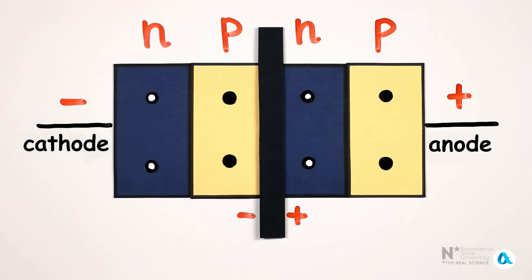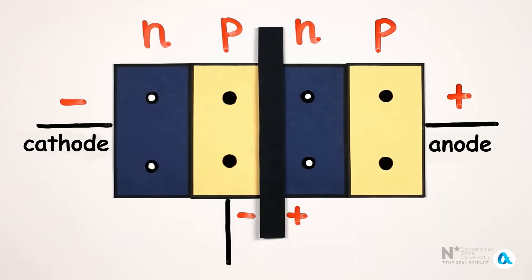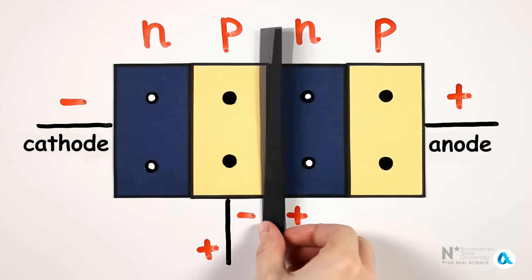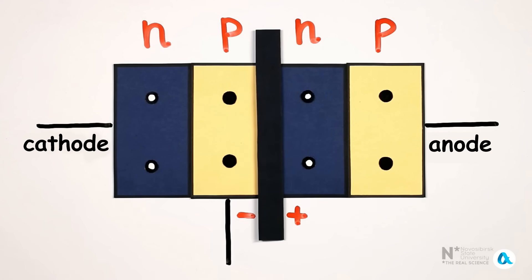However, we also have a control electrode, which is connected to the p-region adjacent to the cathode. And when we apply a positive voltage to it, the breakdown of the middle p-n junction occurs at significantly lower voltages. In this case, after removing the voltage from the control electrode, the middle junction remains open until the voltage between the anode and cathode is removed.